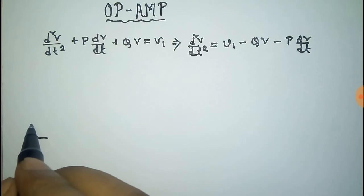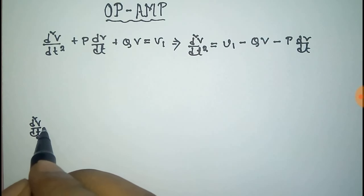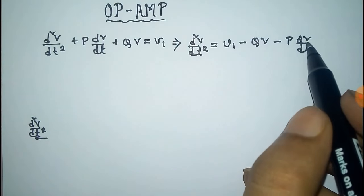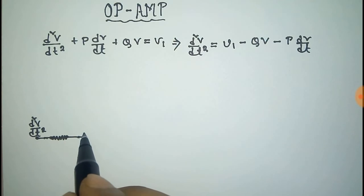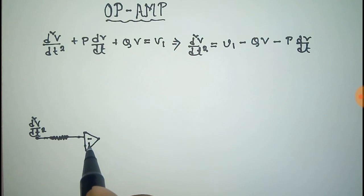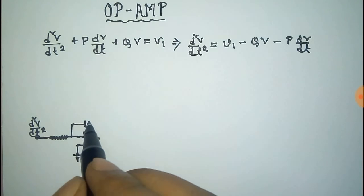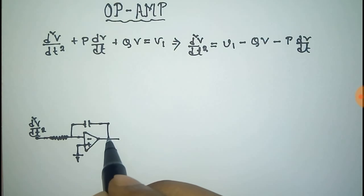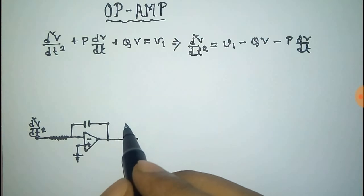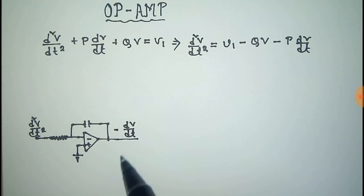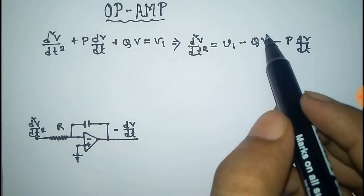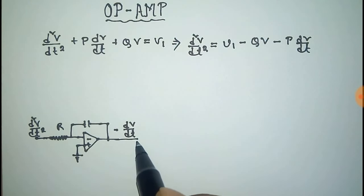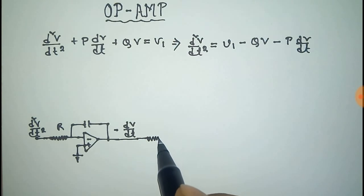The first input is d²v/dt², and here we have to obtain v and dv/dt. For this, we need to integrate d²v/dt², so we need an integrator op-amp. We make an integrator op-amp with the inverting and non-inverting terminals, ground, and a capacitor. This will integrate d²v/dt² and produce dv/dt. Because it is at the inverting terminal with resistance R, we get minus dv/dt. Now we need to integrate again to obtain v, so we need another integrator op-amp.